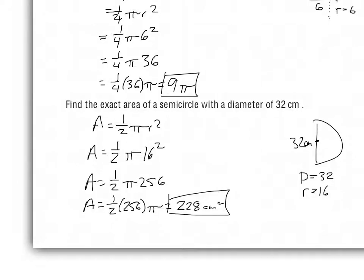Looking at this one: we have the area of a semicircle with a diameter of 32. Once again, we're given the diameter — we need the radius, which is 16. This is one-half of π times r squared — one-half of π times 16 squared — which is one-half of π times 256. Half of 256 is 128, giving 128π centimeters squared.